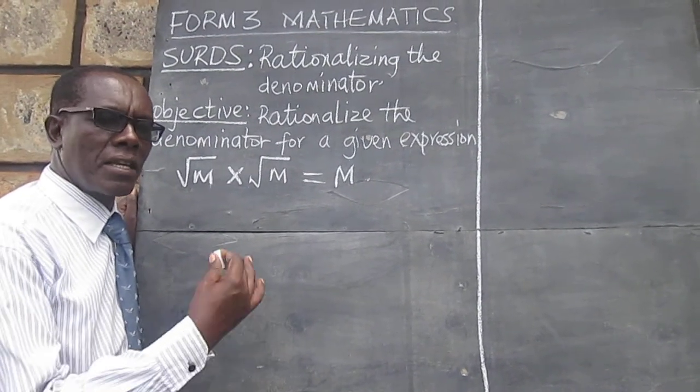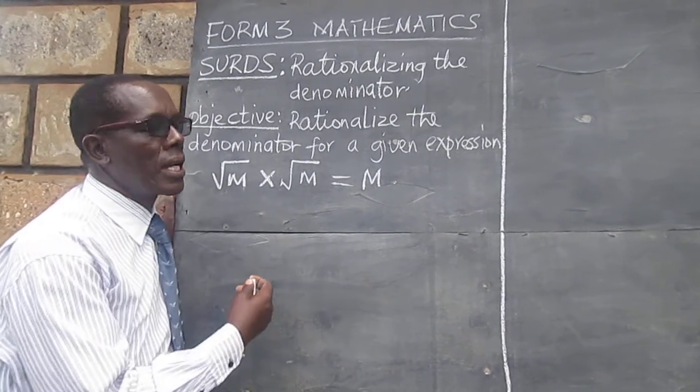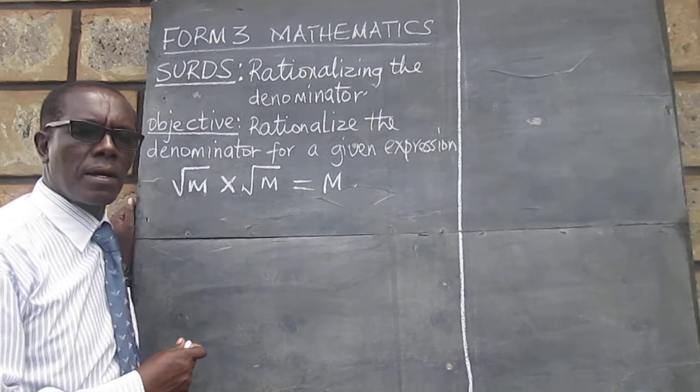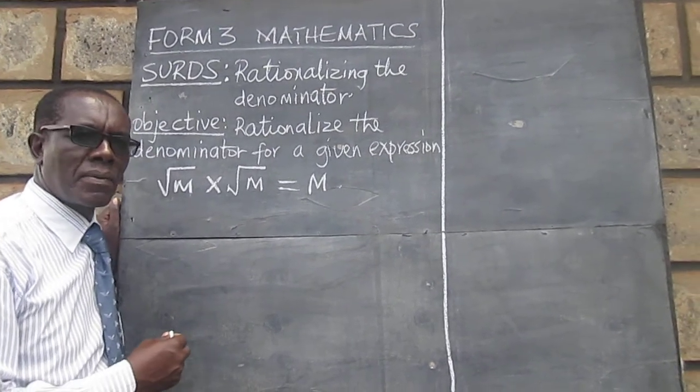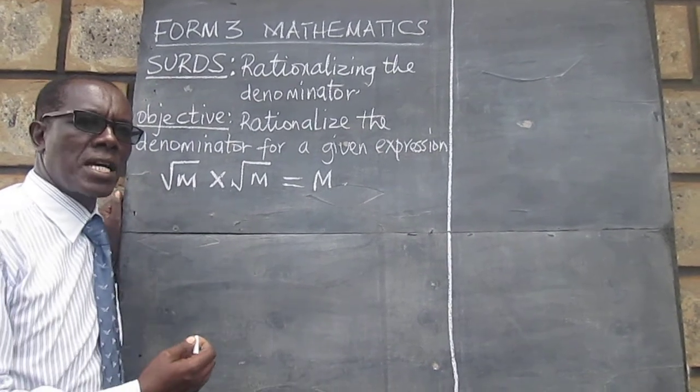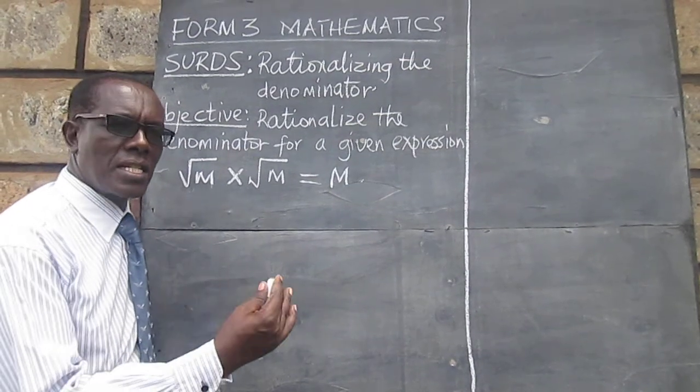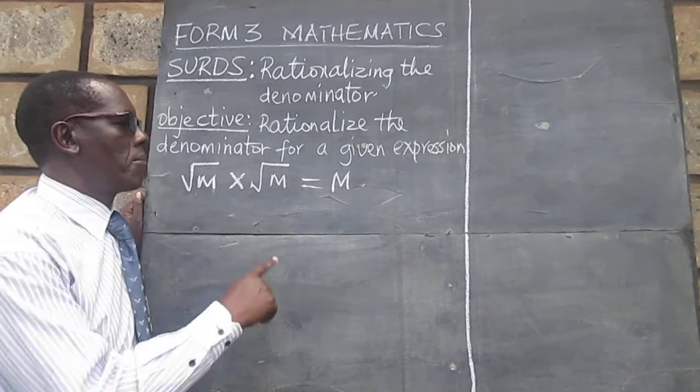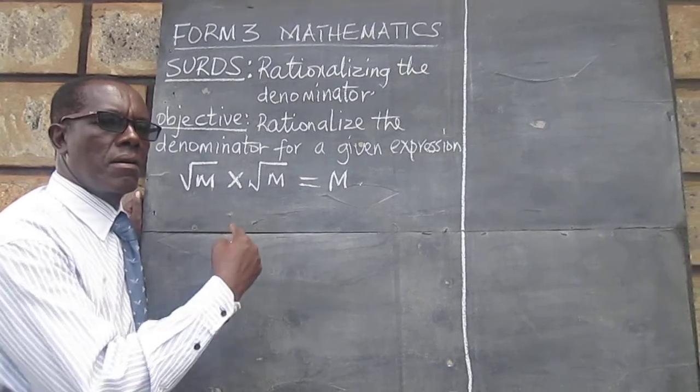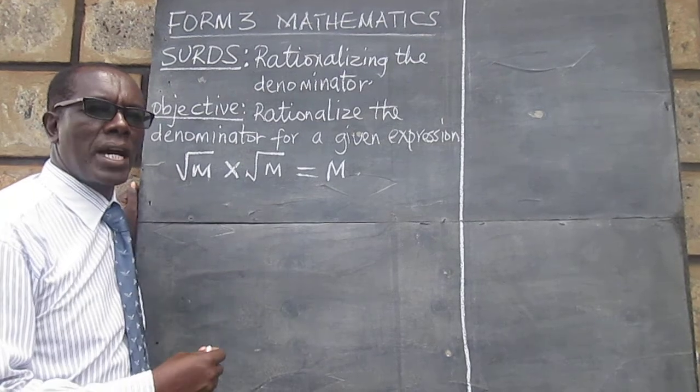Remember in our last lesson we explained that surds are irrational numbers, so when an expression has an irrational number in the denominator we can remove or change that number to rational by either multiplying that number under the root by the same number or by multiplying by the conjugate.